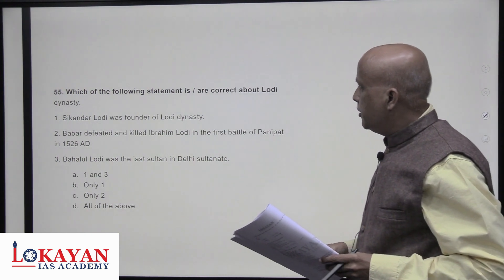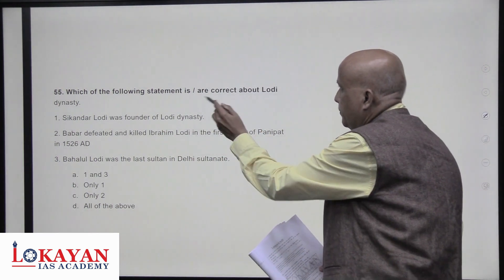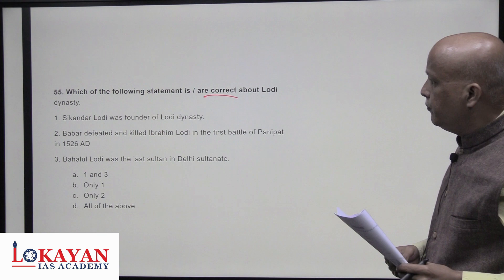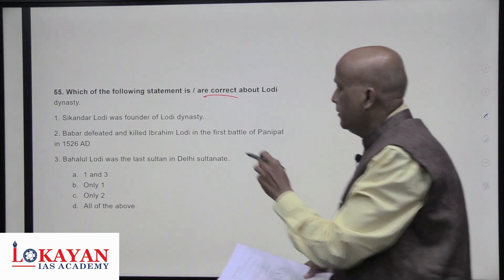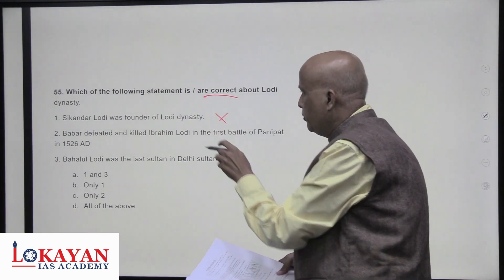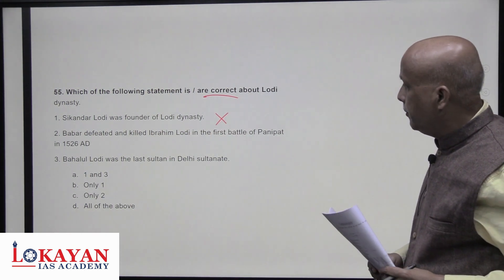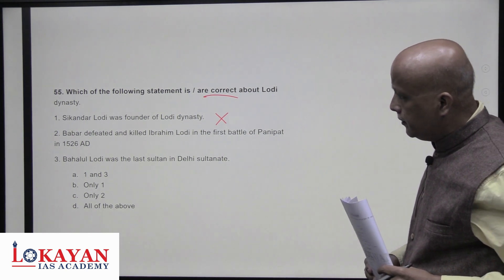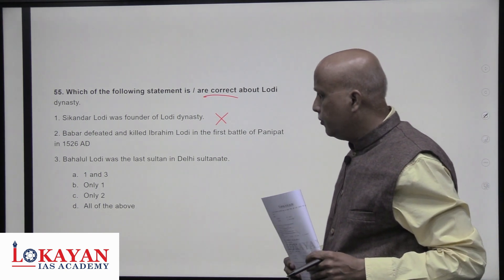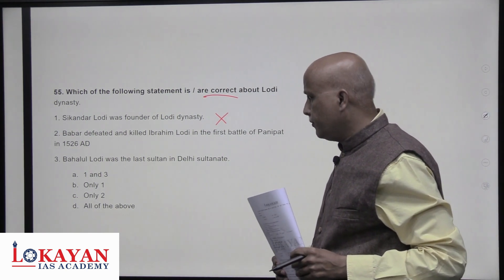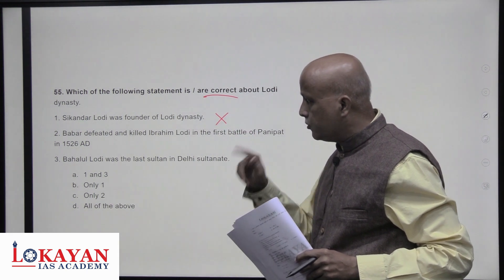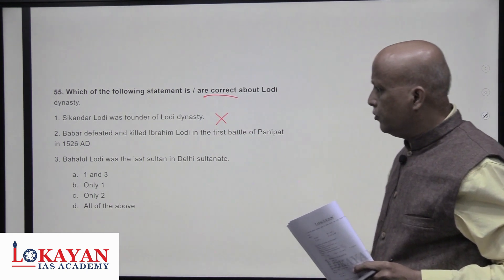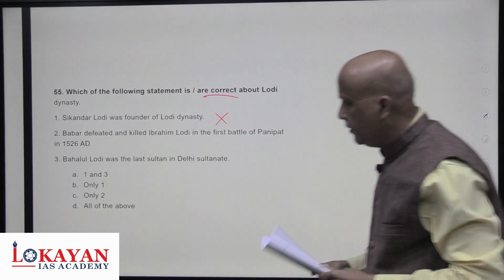Which of the following statements is correct about the Lodi dynasty? Sikandar Lodi was not the founder — Bahlul Lodi is the founder. Babur killed Ibrahim Lodi in the First Battle of Panipat — correct. Ibrahim Lodi was the last sultan of the Delhi Sultanate. Only statement two is correct — answer is C.